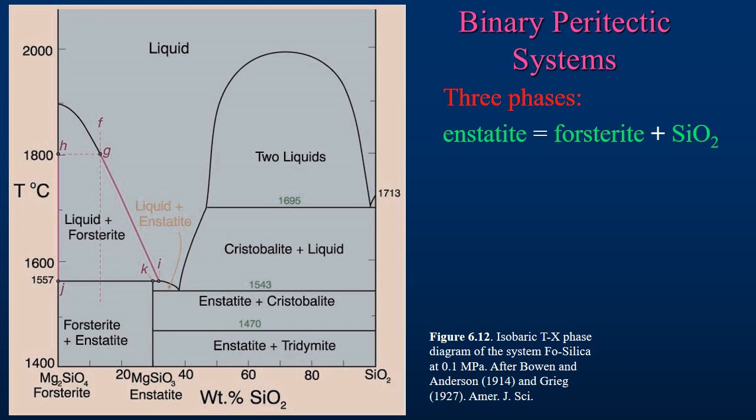Two, or in the case of peritectic systems, three phases are present as independent chemical compounds that, when crystallized, are 100% of the end member. The addition of the third phase creates a more complex system. In addition to the eutectic point, which is the minimum of the liquidus, a second inflection point referred to as the peritectic point is present. On the diagram on the slide, this is point I. There are still only two components in a binary peritectic system, but an intermediate phase, in this case enstatite, is located between the end member phases.